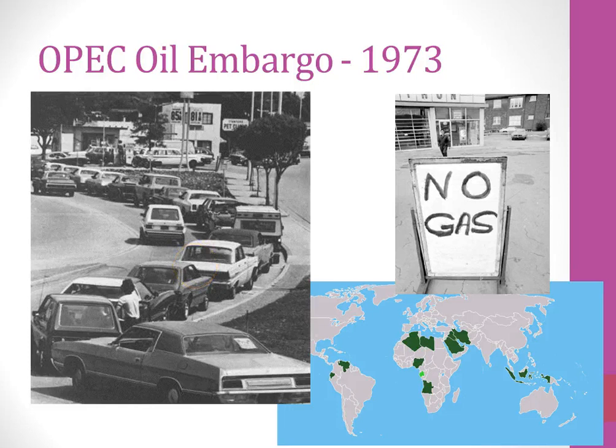The OPEC oil embargo of 1973 was the first time we really faced the idea that we might run out of energy. It was largely seen as a trade issue — OPEC decided to exclude us, so we faced a massive shortage of gas imports. We saw similar price increases later, especially in 2005 when Hurricane Katrina and Dennis took out rigs and refineries. But we learned from 1973 onward that energy independence is a matter of national security, making it critical for sustainability, renewable energy, and national security.